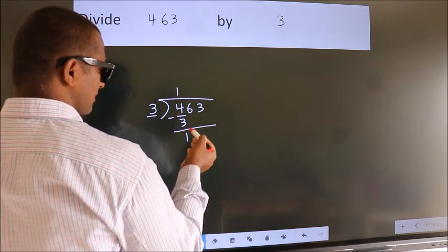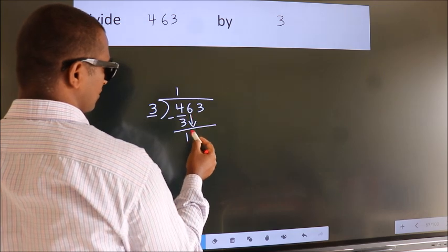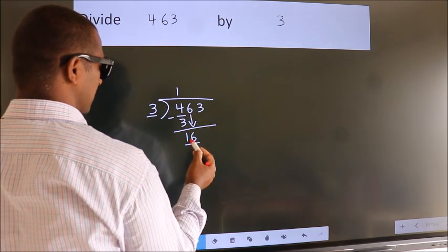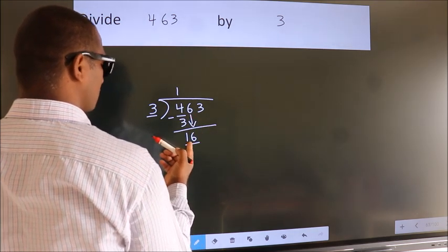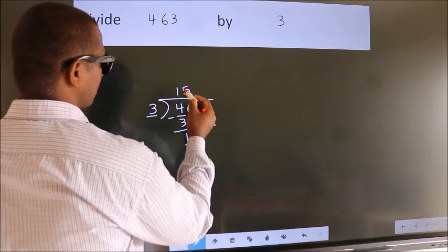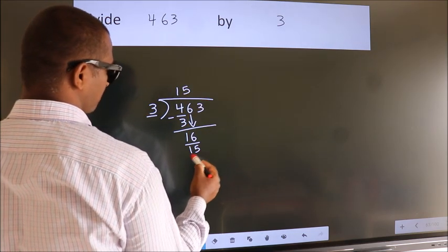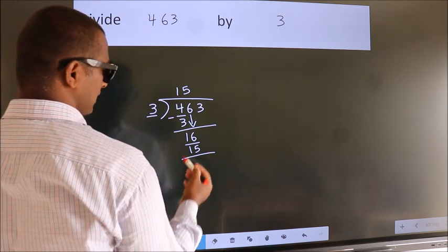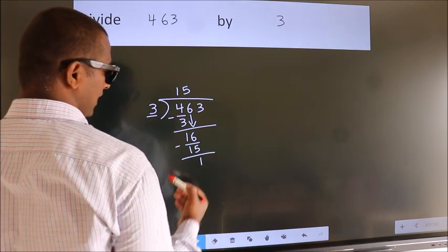After this, bring down the beside number. So 6 down. So 16. A number close to 16 in 3 table is 3 fives 15. Now we subtract. We get 1.